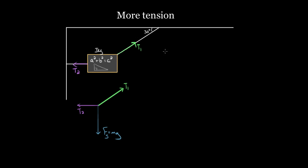After drawing the forces, we go to Newton's second law: acceleration equals net force divided by mass. Which direction do we pick? Look for something you already know. I know the mass is three kilograms and gravity gives me mg = 30 Newtons — a vertical force. So I'll start with the vertical direction. If the chalkboard is at rest, hanging from these strings, the vertical acceleration is zero.